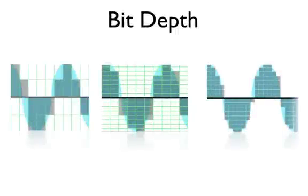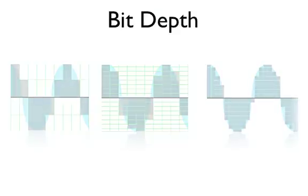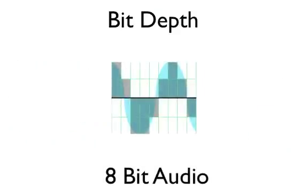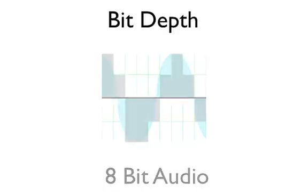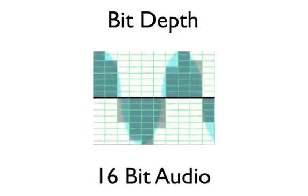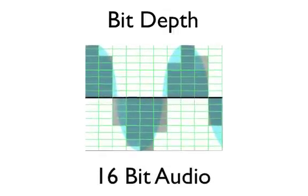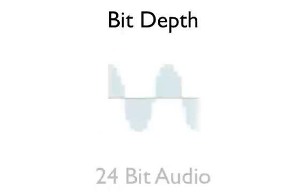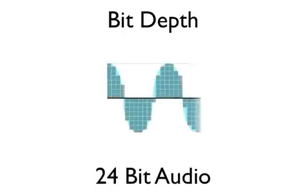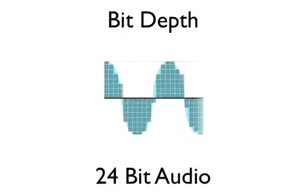Bit depth also determines the quality of sound you end up with. Bit depth defines the dynamic range of the sound, or the amplitude of the waveform. 8-bit audio gives you 256 separate levels for each sample, 16-bit audio gives you 65,536 levels for each sample, and 24-bit audio gives you 16.7 million different levels.